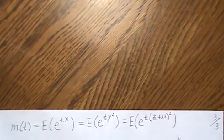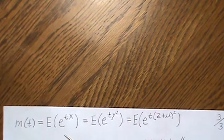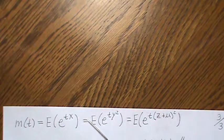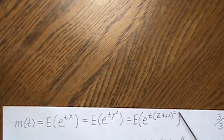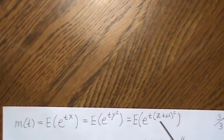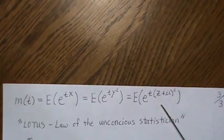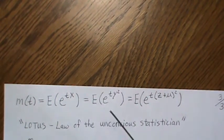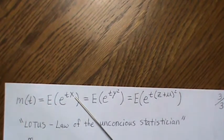Now, to illustrate Lotus, the law of the unconscious statistician, and briefly explain what that is, is here, to find the moment-generating function, we did this. We found the expected value of E to the TX. But now if we replace X with Y-squared, but Y-squared was Z plus mu-squared. So now this expectation is a function of Z, which is standard normal. And the law of the unconscious statistician says that we can take this times the standard normal density. And it's going to be the same thing as if we take E to the TX times the non-central chi-square distribution.